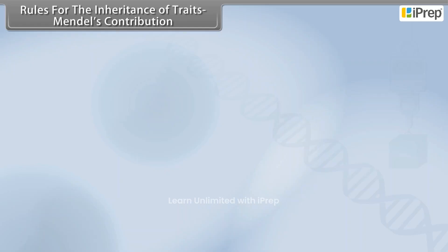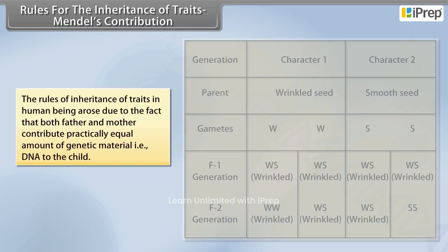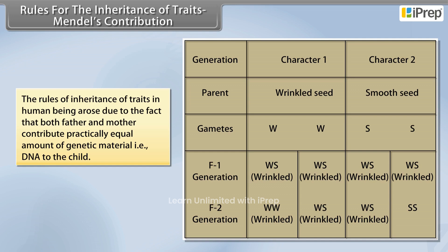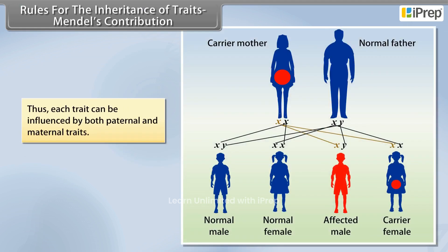Rules for the Inheritance of Traits: Mendel's Contribution. The rules of inheritance of traits in human beings arose due to the fact that both father and mother contribute practically equal amounts of genetic material, i.e., DNA to the child. Thus, each trait can be influenced by both paternal and maternal traits.